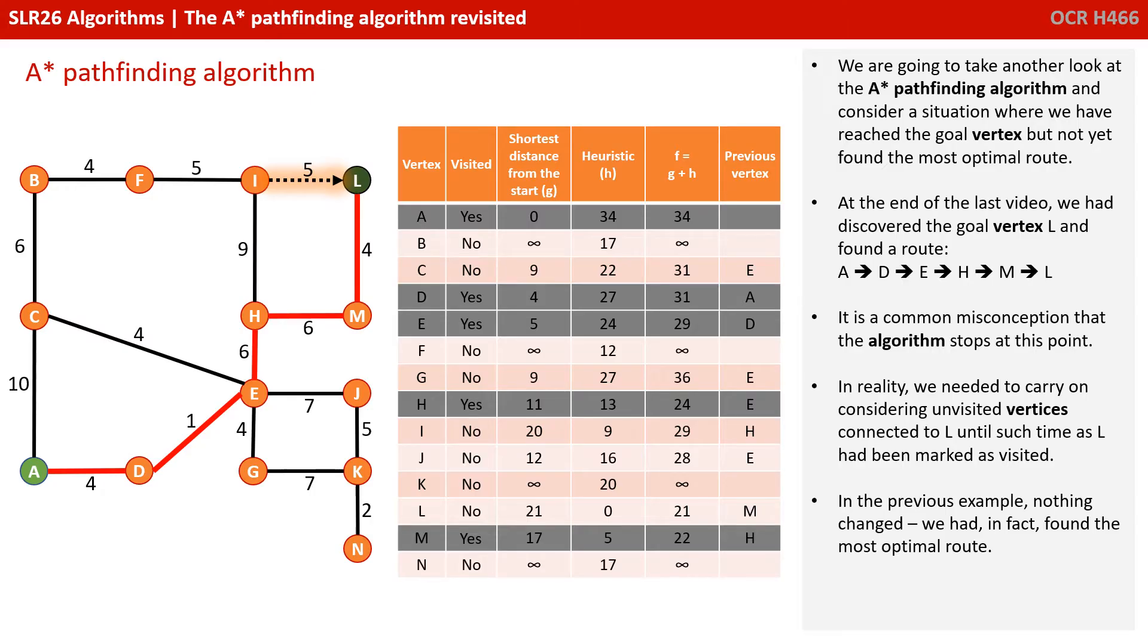In reality, we need to carry on considering unvisited vertices connected to L until such time as L has been marked as visited. In our previous example, nothing changed. We had, in fact, already found our most optimal route.